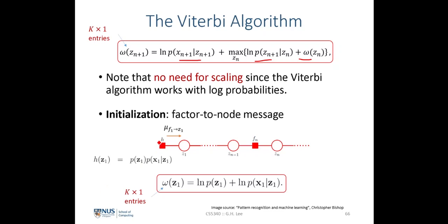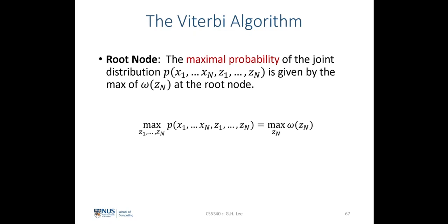We initialize the first factor-to-node message as a K×1 vector equivalent to log p(z_1) plus log p(x_1 | z_1) — the log probability of the prior and emission terms combined. The maximum probability of the joint distribution is then given by the maximum of omega(z_N) at the root node, where we define the root as the last random variable in the chain.